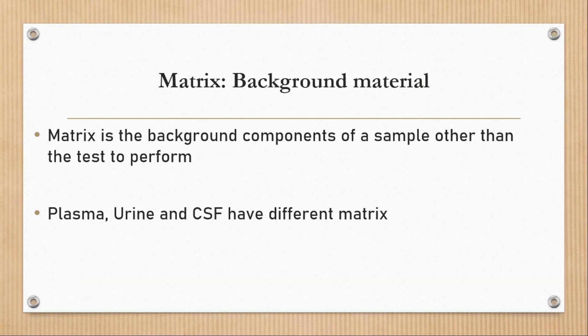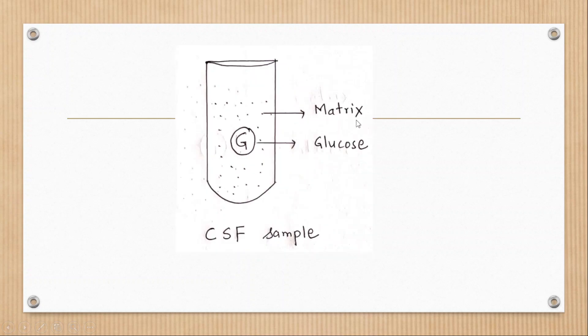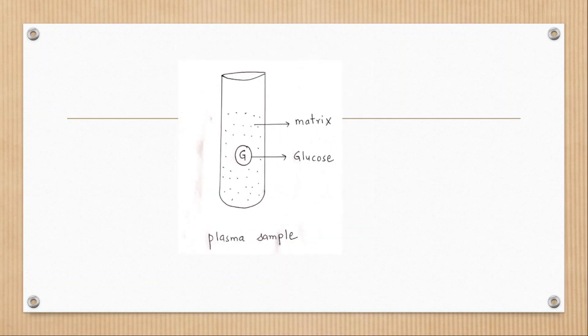Let's become clear by an example. Here, sample is urine and if we are going to test glucose, then other than glucose all other components present in urine is matrix. Similarly, if sample is CSF and test is glucose, all components present in CSF is matrix except glucose. In the same way, if sample is plasma...